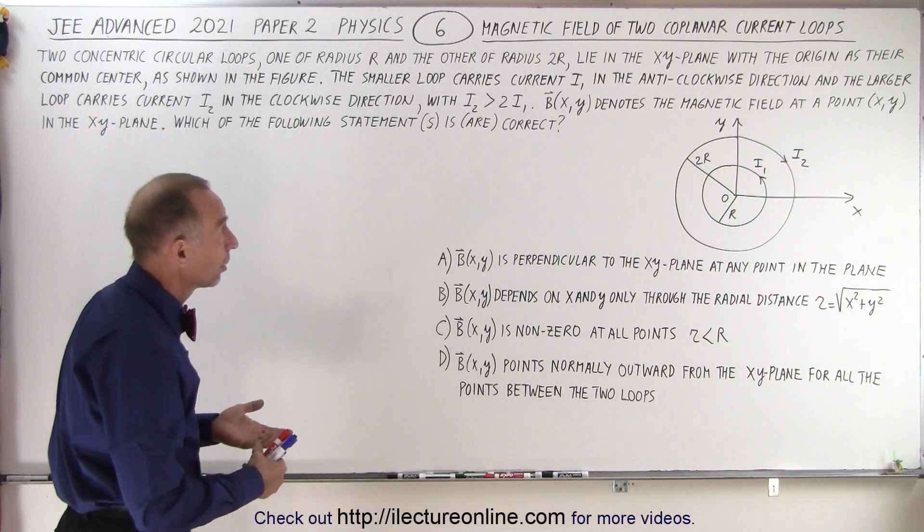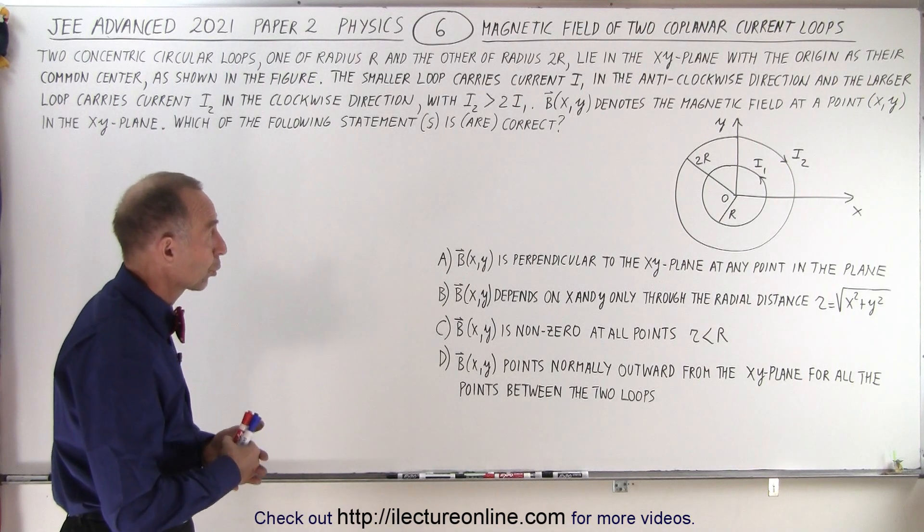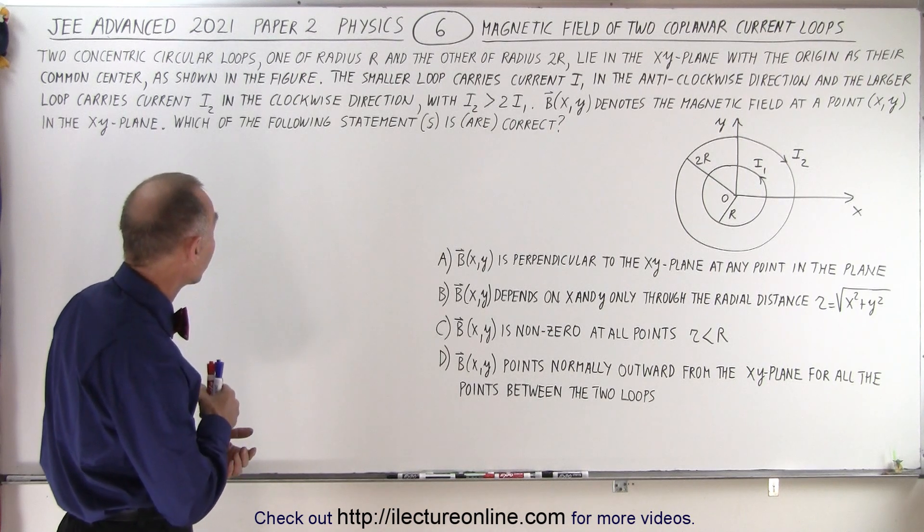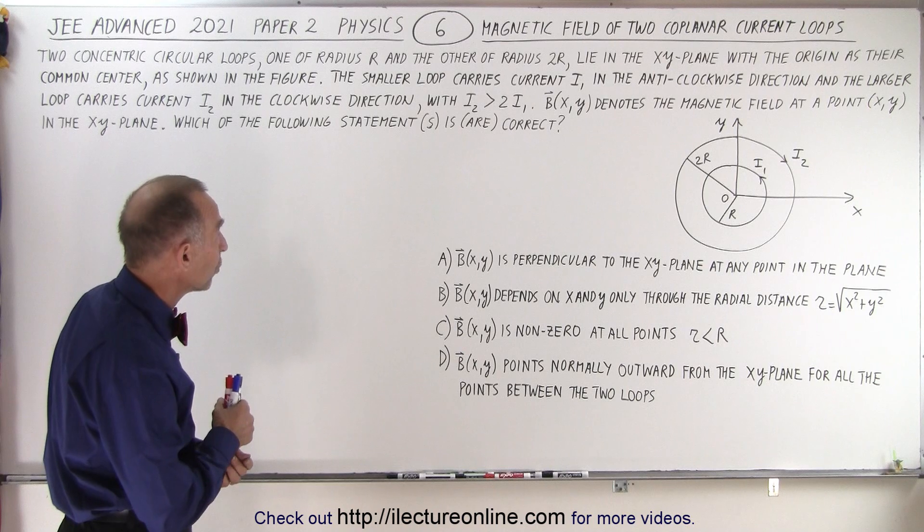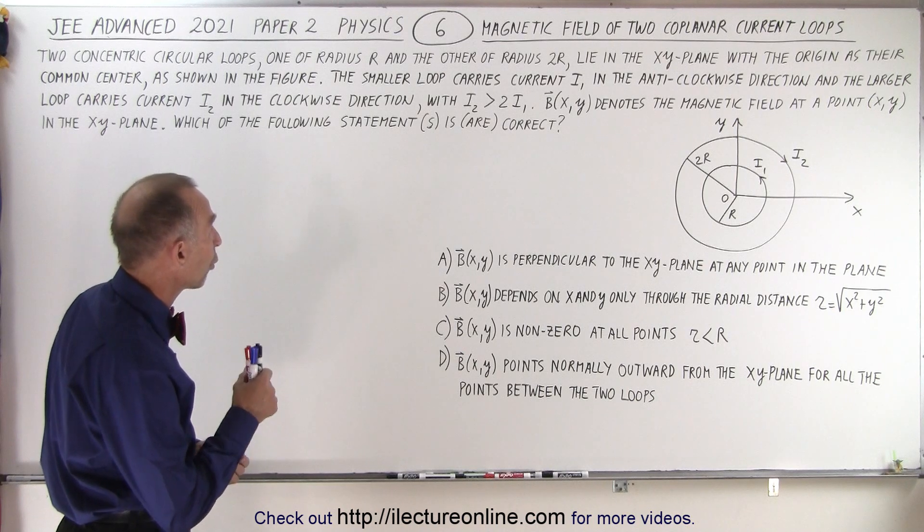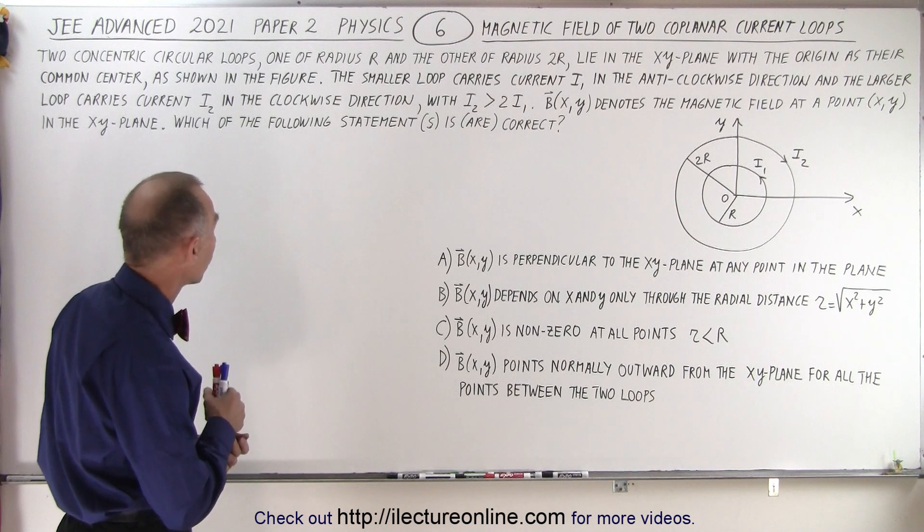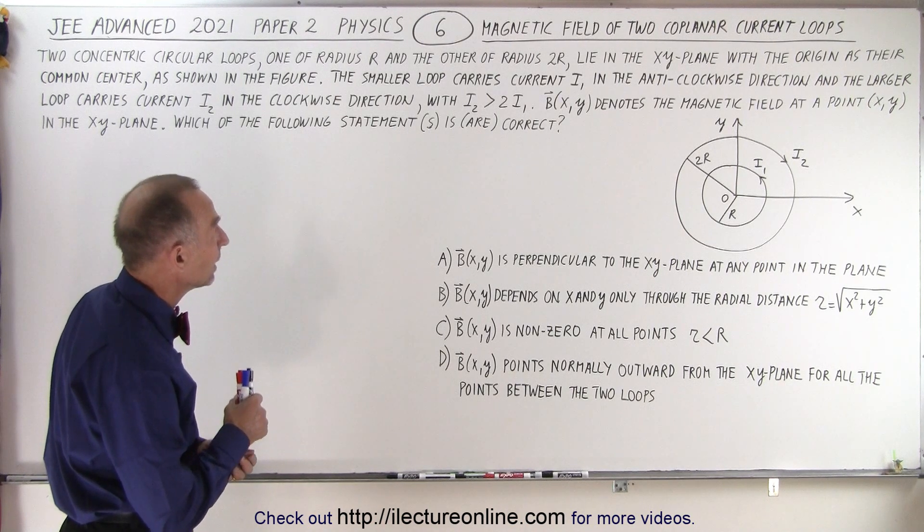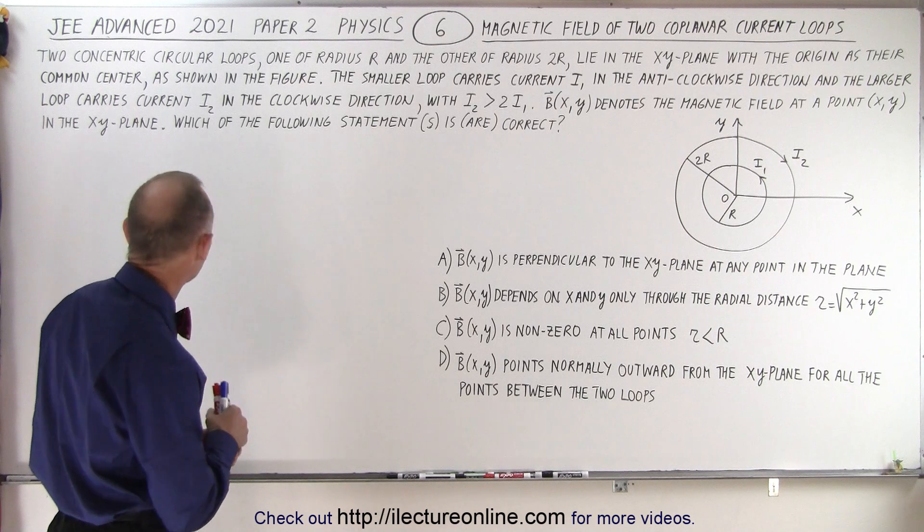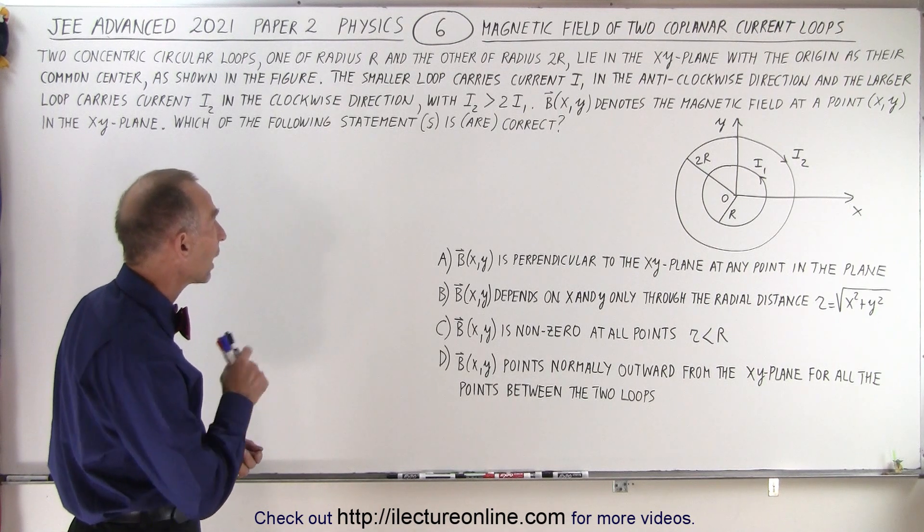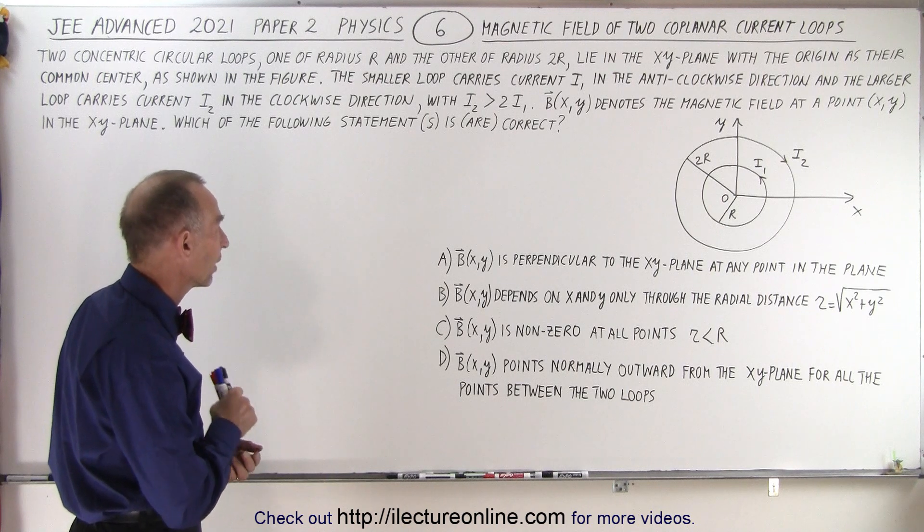It deals with the magnetic field of two coplanar current loops. The concentric circular loops, one of radius r and the other of radius 2r, lie in the xy plane with the origin as their common center, as shown in the figure. The smaller loop carries current i1 in the anti-clockwise direction and the larger loop carries current i2 in the clockwise direction with i2 greater than twice i1.